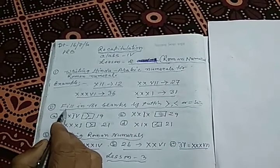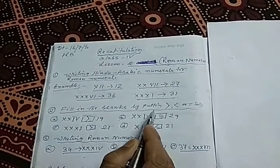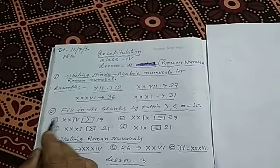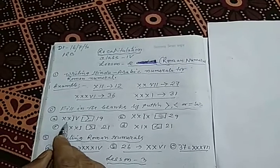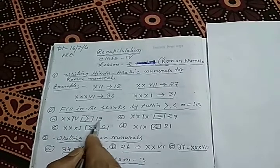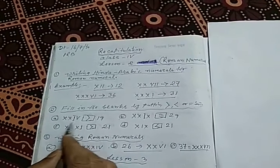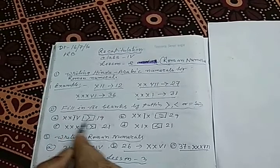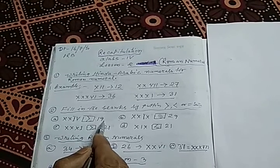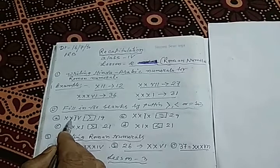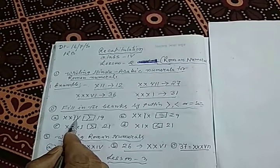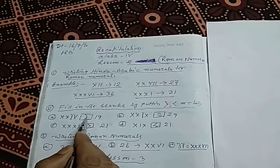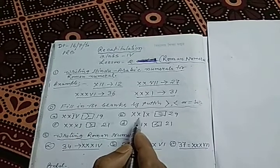In the second item, fill in the blanks by putting a greater than, less than, or equal sign. That means, compare two numbers. In example A, one number is in Hindu-Arabic and another is in Roman numerals. You have to observe: 10 plus 10 equals 20, plus 4 equals 24. On the right side it is 19. Obviously, 24 is greater than 19, so the greater than sign is to be put.